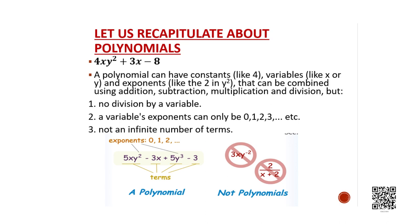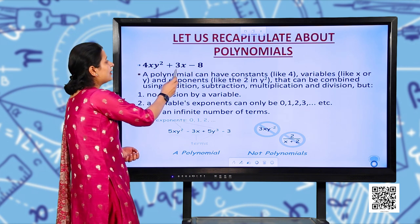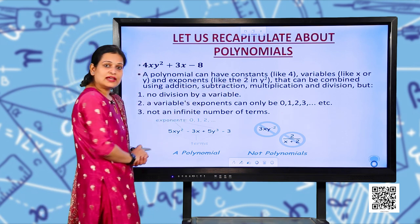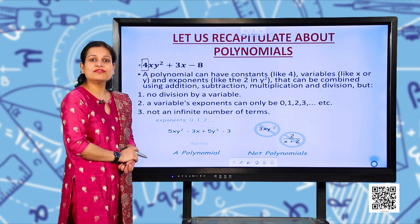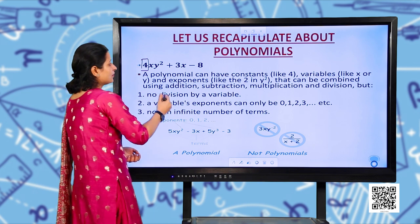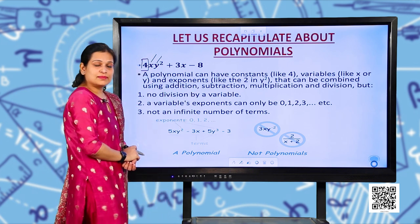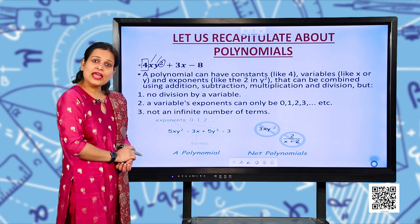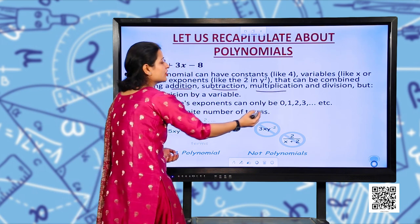Now before we start with the chapter, let us recapitulate about polynomials. Suppose I have a polynomial: 4xy² + 3x − 8. A polynomial can have constants — like 4, which is the coefficient of xy² — variables (here there are two variables, x and y), and exponents like 2 in y². These can be combined using addition, subtraction, multiplication, and division.